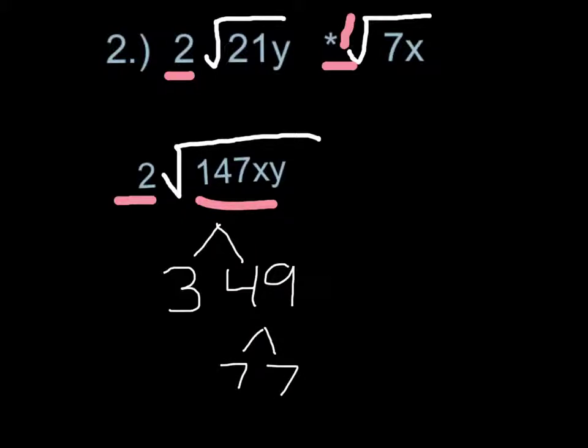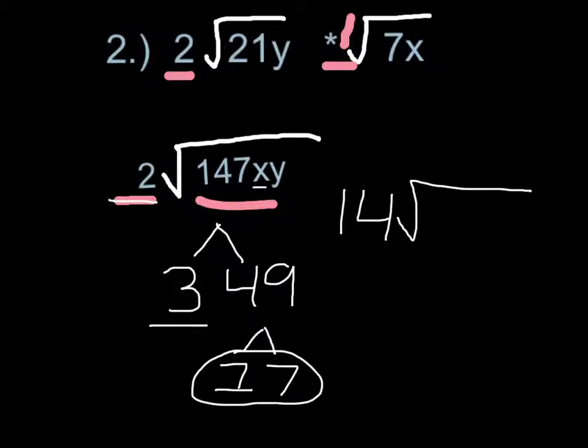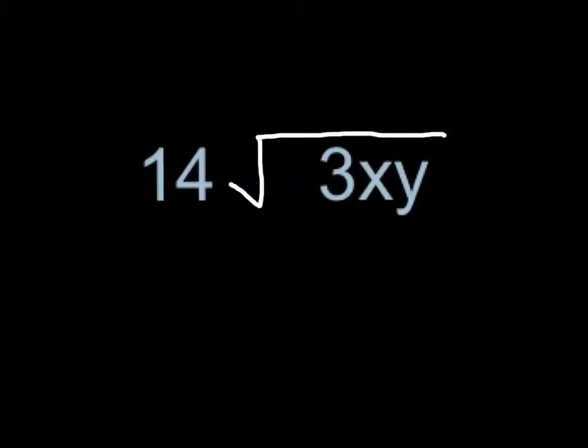To put all these numbers together, you find the pairs, which is 7. 7 times 2 equals 14, so 14 goes on the outside of your new number. On the inside would be 3, x, and y. They have to be multiplied together because they don't have any pairs. So 3x and y multiplied together would be 3xy. The answer is 14 square root of 3xy.